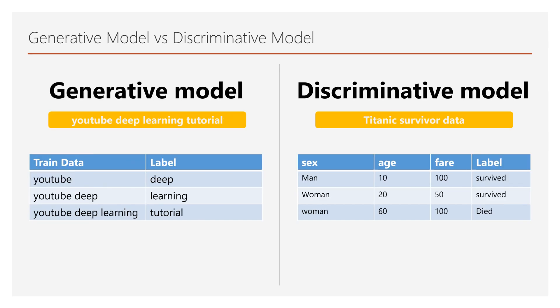Now let's talk about Generative Training. There are two types of Machine Learning training. One is Generative Model Training, and the other is Discriminative Model Training. The Language Model training we just saw is Generative Model Training. On the other hand, most Machine Learning practitioners are familiar with Discriminative Model Training. One of the most popular examples is predicting Titanic survivors using their age, sex, fare information, etc.